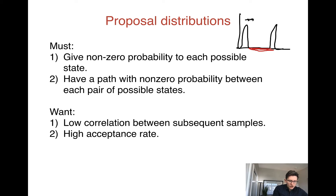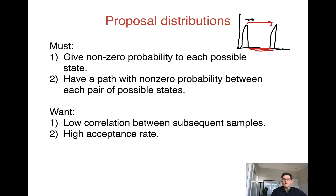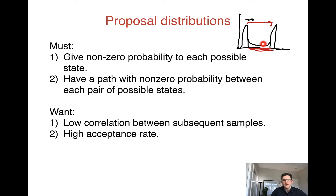To handle that, one option is to include longer-distance proposals — some proposals that take us all the way across the gap. Another approach, which is more reasonable in practice, is that for most distributions there would be some non-zero probability in the middle. So even though it wouldn't happen very often, occasionally MCMC would accept those moves and take us across between the two clusters, and then occasionally go back.